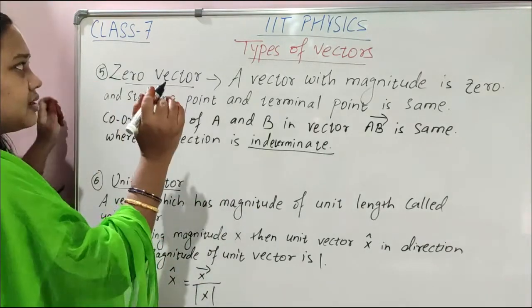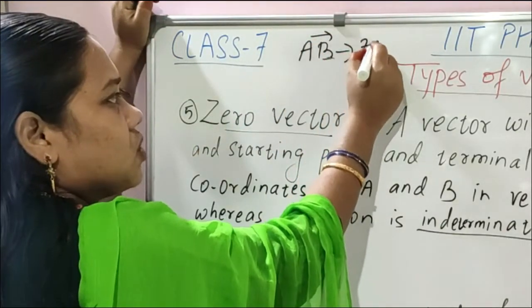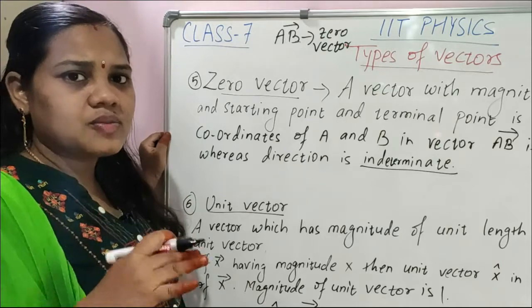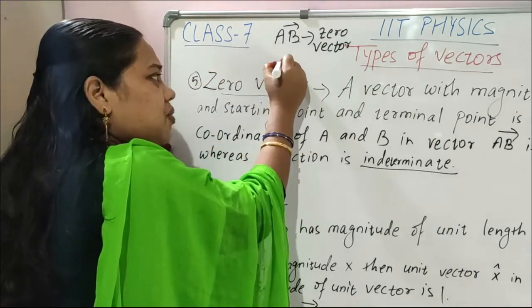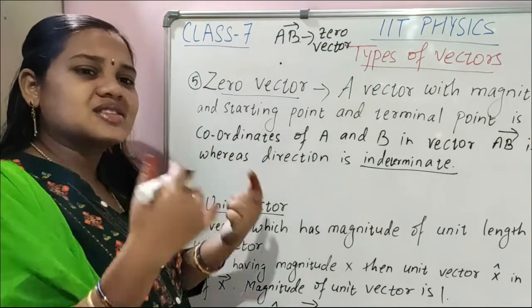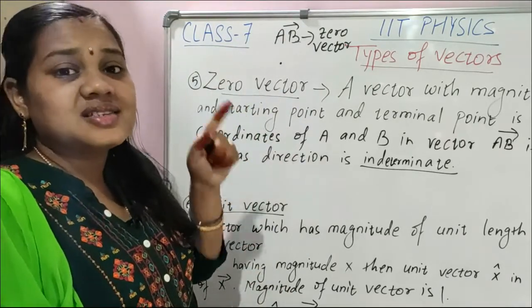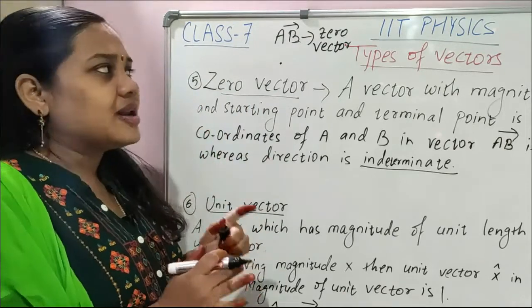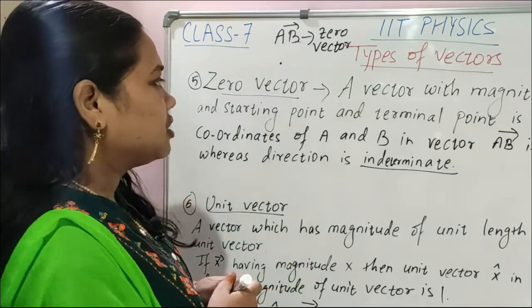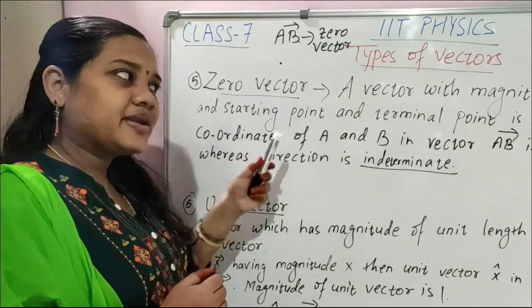Suppose the vector is AB, and it's a zero vector. Zero vector means magnitude is zero. The initial point and ending point are the same — from where it starts, there only it ends. So starting point and ending point both are same, meaning magnitude is zero. For such a vector, direction is also zero — starting point and ending point, the terminal point, are the same.